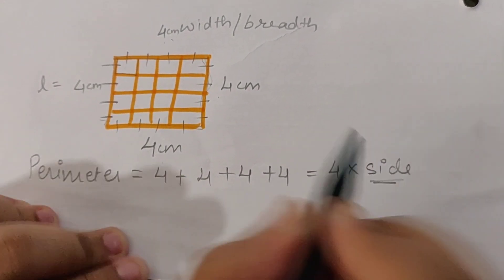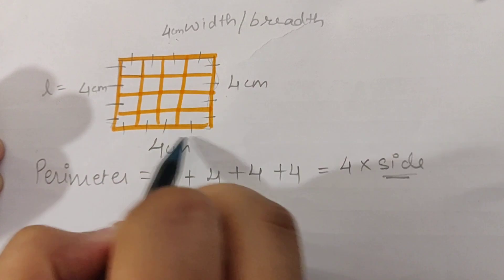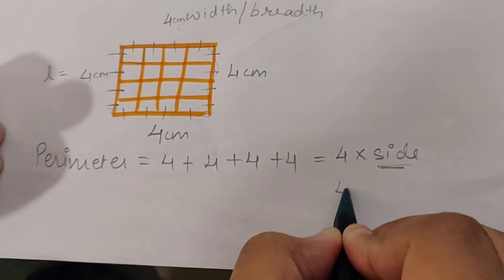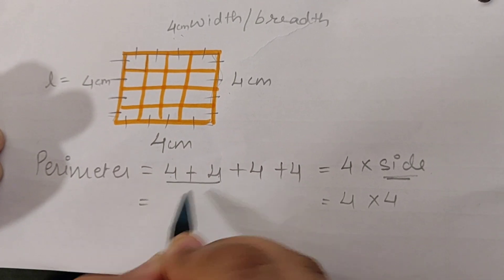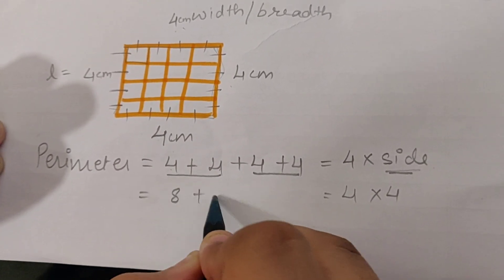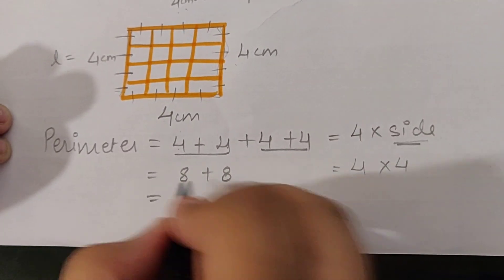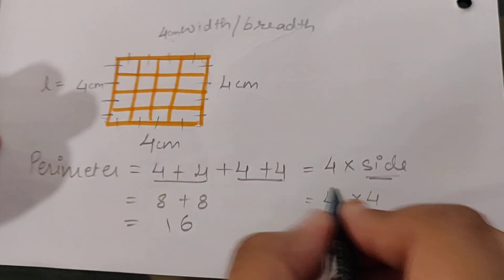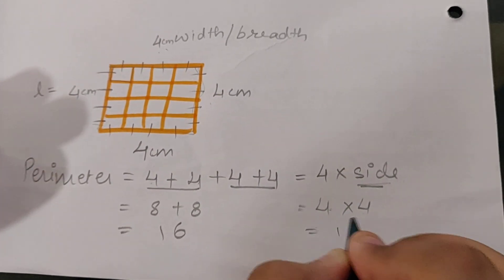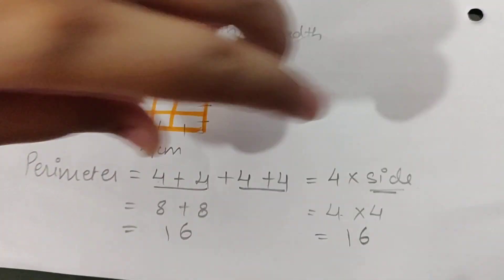So if you add 4 plus 4 is 8, 4 plus 4 is 8, you get how much? 16. And here also 4 into 4 we have 16.